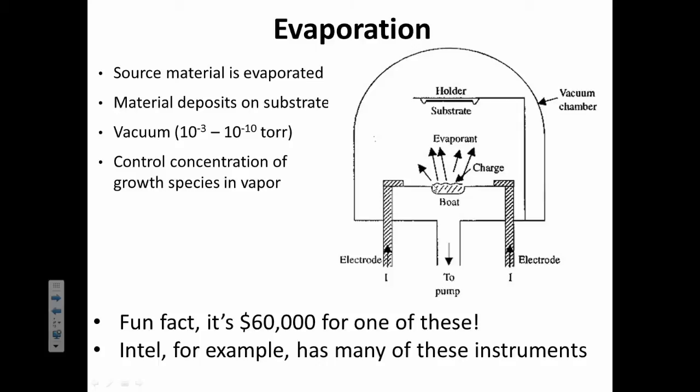They're putting different thin layers on their chips. So, here we've got our source, which is right down here where my arrow is. And we're trying to deposit a material onto the substrate, which is up here. So, it's under vacuum, and you can control the concentration of your growth species. Basically, that'll determine how thin of a layer you've got based on how much of your source material you have.